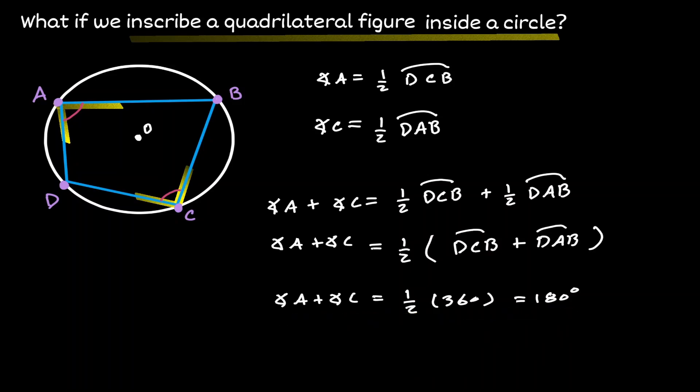The same can be said about angle B and angle D — if we were to add those two angles, they are also equivalent to 180 degrees. In conclusion, when we draw a quadrilateral inside a circle, opposite angles will always be supplementary to each other.